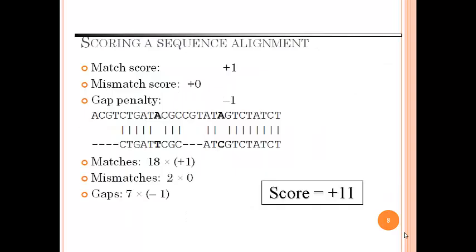Scoring a sequence alignment: for a mismatch score it is plus 0, for a match score it is plus 1, and for gap penalty the score is minus 1. Matches lead to 18 times plus 1, mismatches lead to 2 times 0, and gaps lead to 7 times minus 1, which gives you a total score of plus 11.